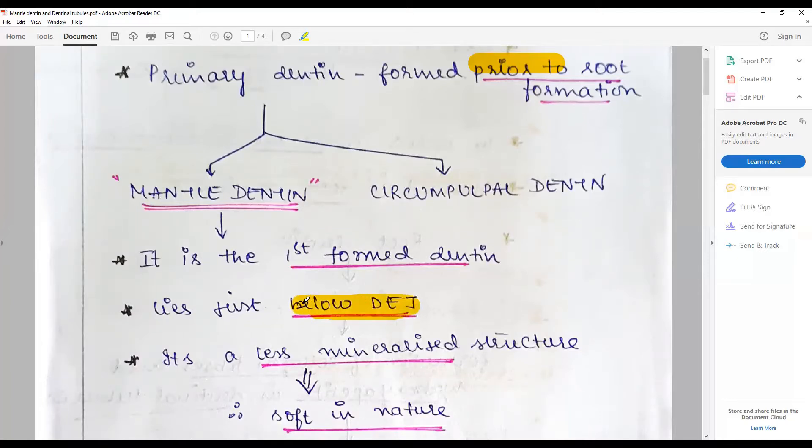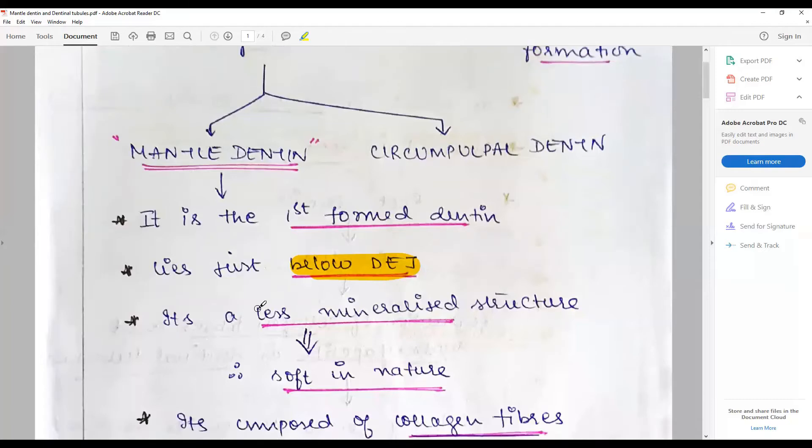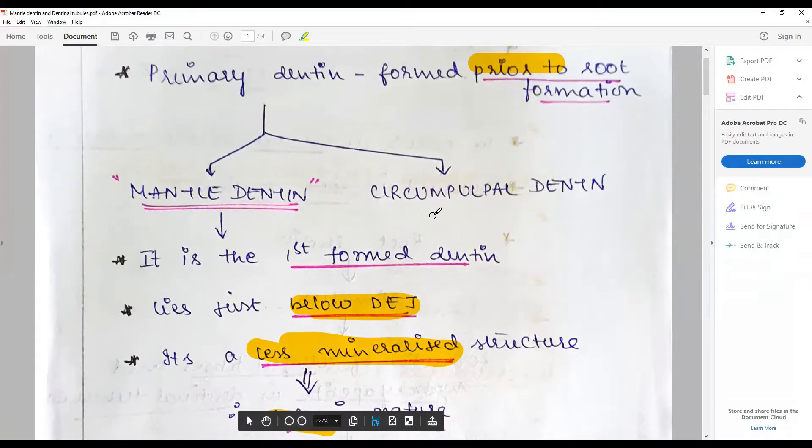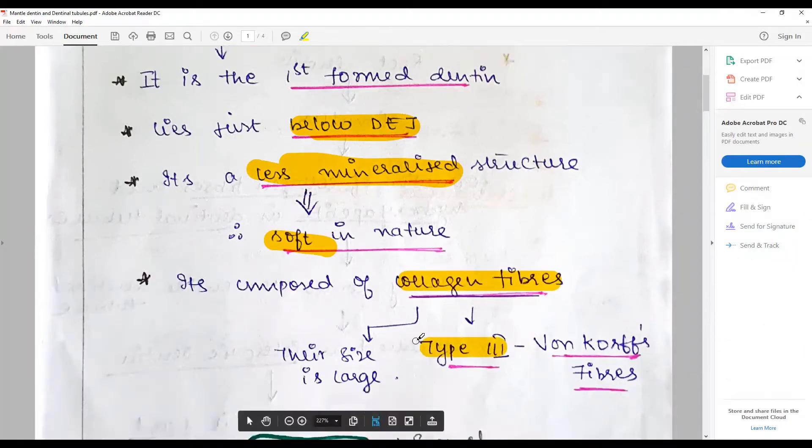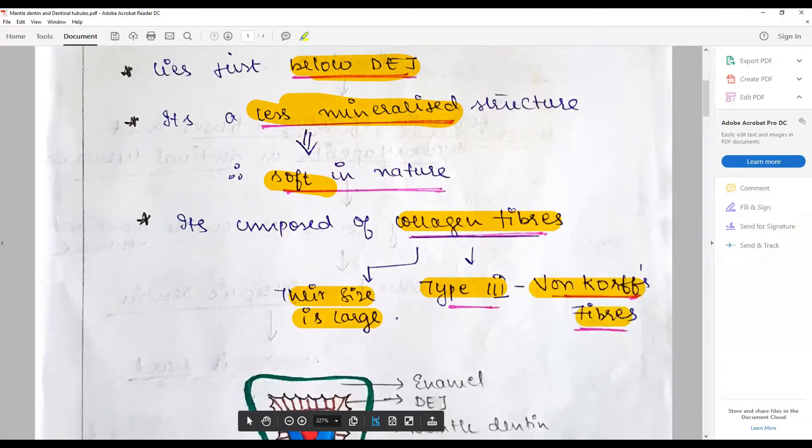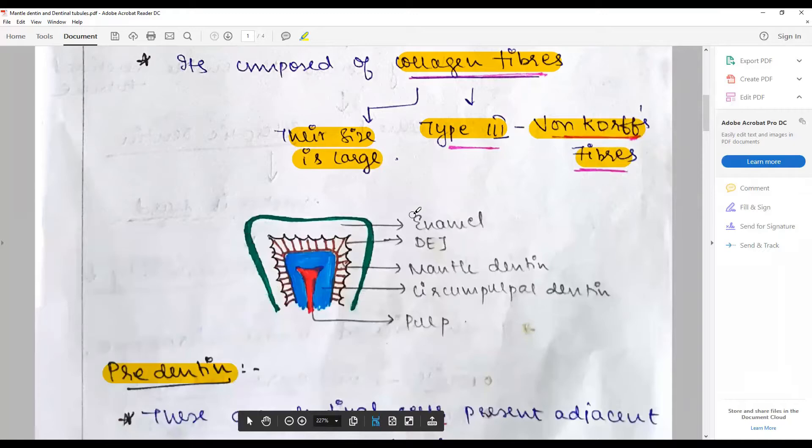It is an approximation with the DEJ. Comparatively, it is less mineralized structure, hence softer in nature than circumpulpal dentine. It is composed of a different type of collagen fibers called Type 3, and their sizes are traditionally said to be large. They are also known as Von Korff's fibers.